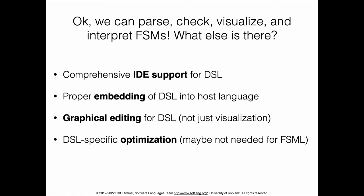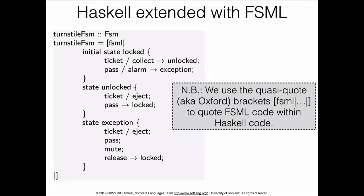So we can parse FSMs, check them for various FSM-like properties, visualize them, interpret or simulate them. What else might we want when implementing a DSL? First, we might want comprehensive IDE support — we don't have that here, just a parser. We might also want to properly embed the DSL into an existing host language, mixing Java or Haskell with FSM code, support graphical editing, or implement sophisticated optimizations — though for this simple FSML there's not much to do.